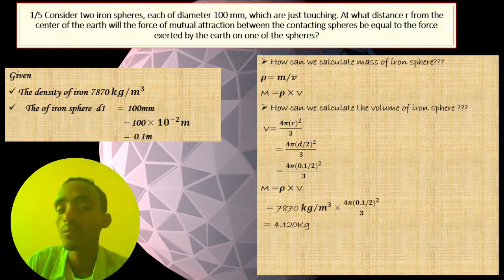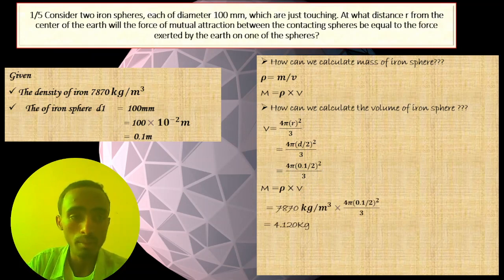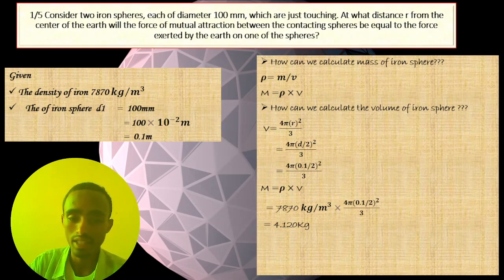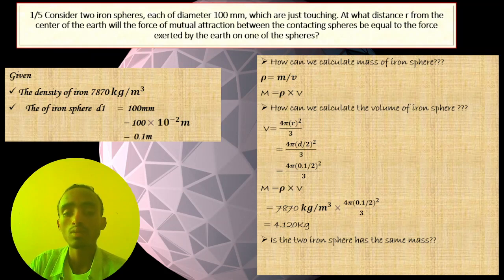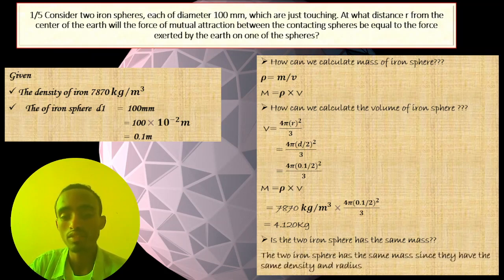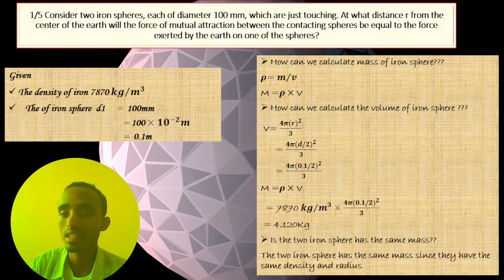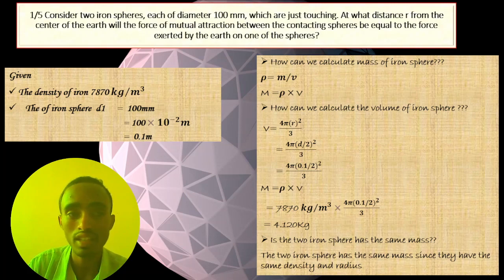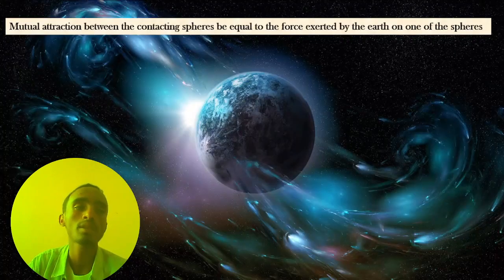Substituting both values, we get a mass of 4.12 kilograms. This is the mass of each iron sphere. The two identical iron spheres have the same mass because they have the same density and the same radius — if two spheres have the same density and radius, they must have the same mass.